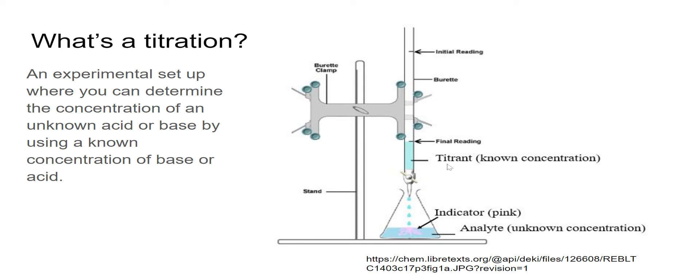What goes into the burette is the titrant, and the titrant is the thing that you know the concentration of. Now, what you're going to put into the flask is the analyte, which is the acid or base that you don't know the concentration of. What we're going to use, of course, in there is an indicator, and it's going to eventually turn pink.